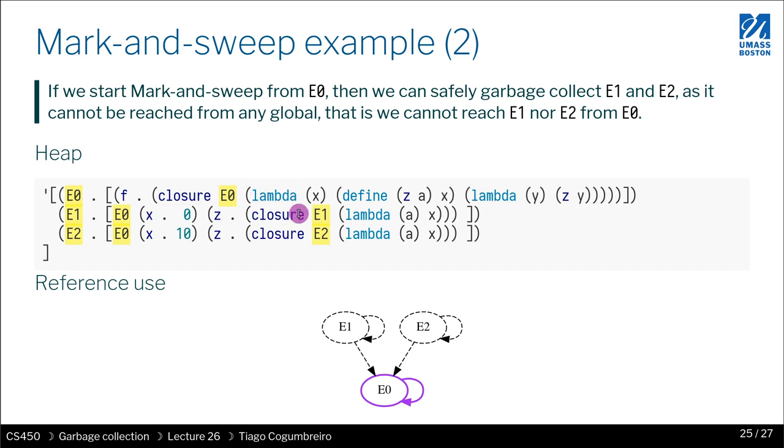In the second example, let's say we start from E0. From E0, there's only a reference to itself. But if we start from E1, then you would keep E1 and E0, and you could safely remove E2. It really depends where you start in the graph.